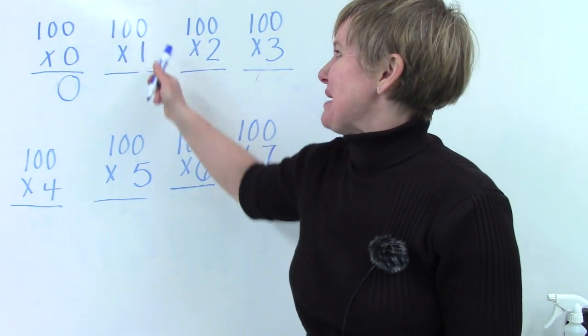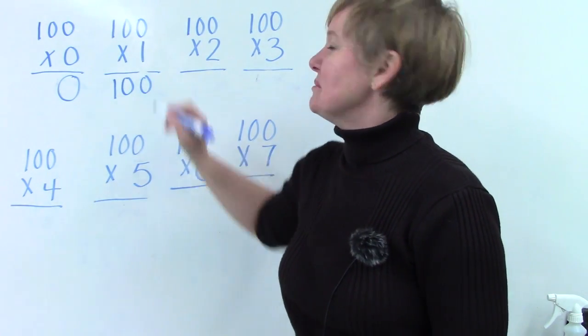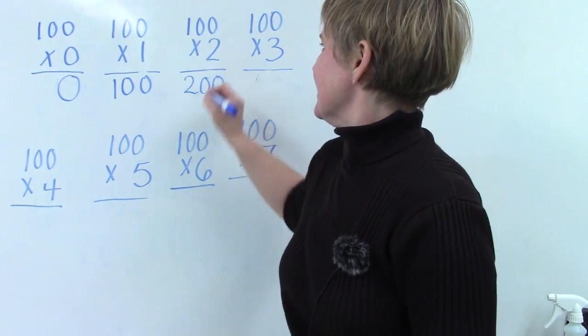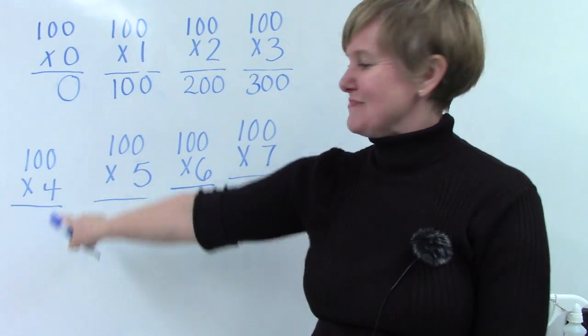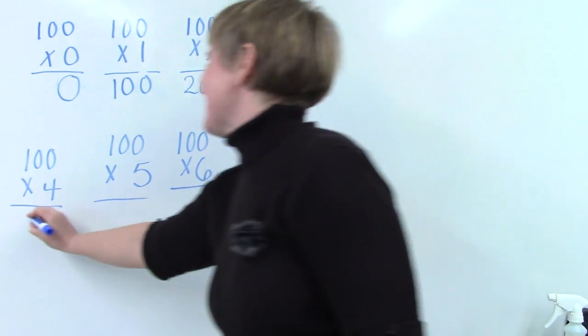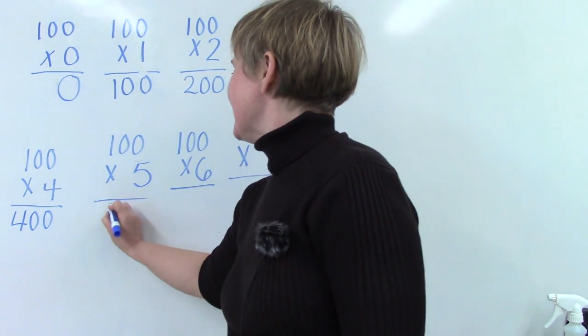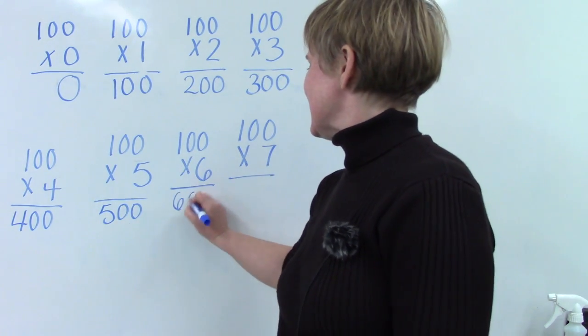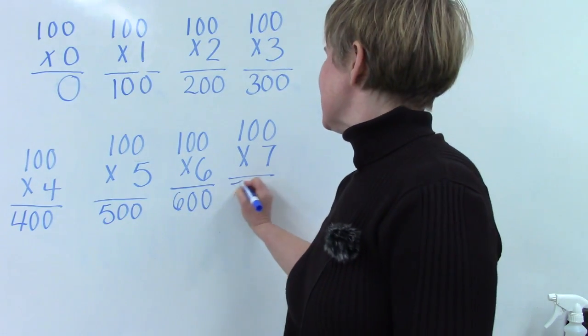What about a hundred groups of one? Well, that is one hundred. One hundred groups of two. Two hundred. One hundred groups of three is three hundred. What about one hundred times four? That is four hundred. Or one hundred times five? Five hundred. Or one hundred times six? Six hundred. Or one hundred times seven? Seven hundred.